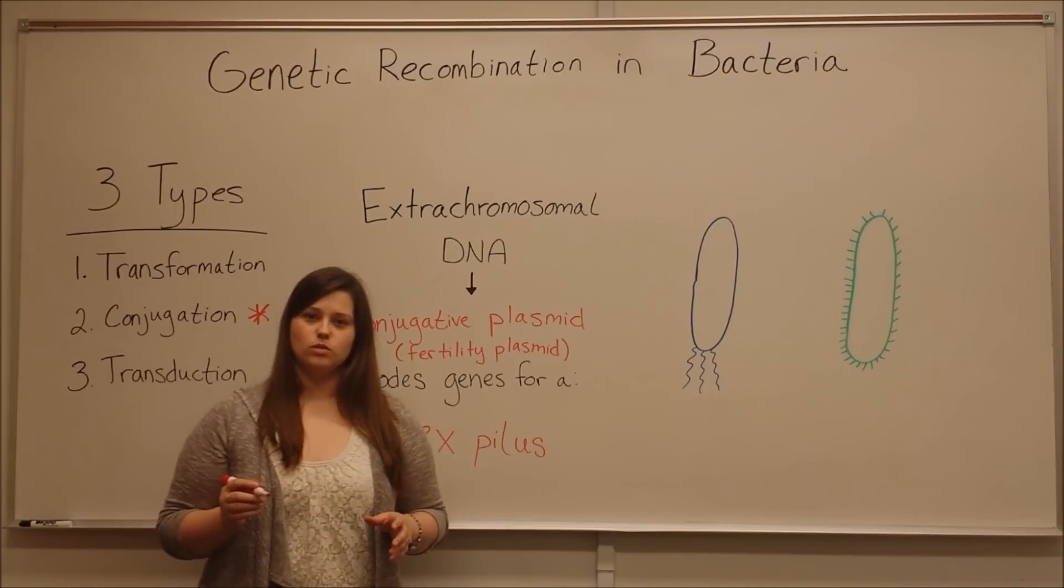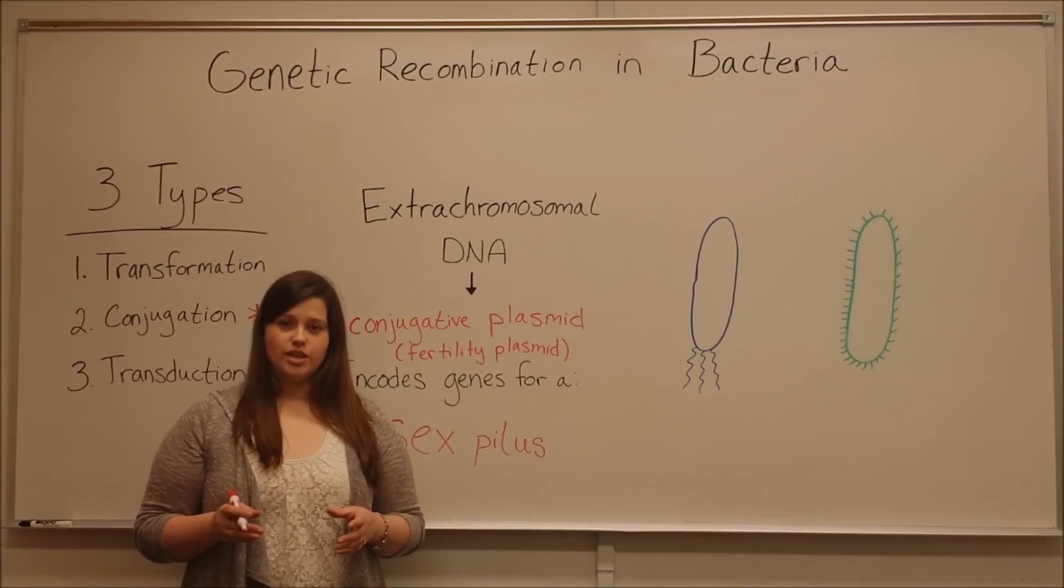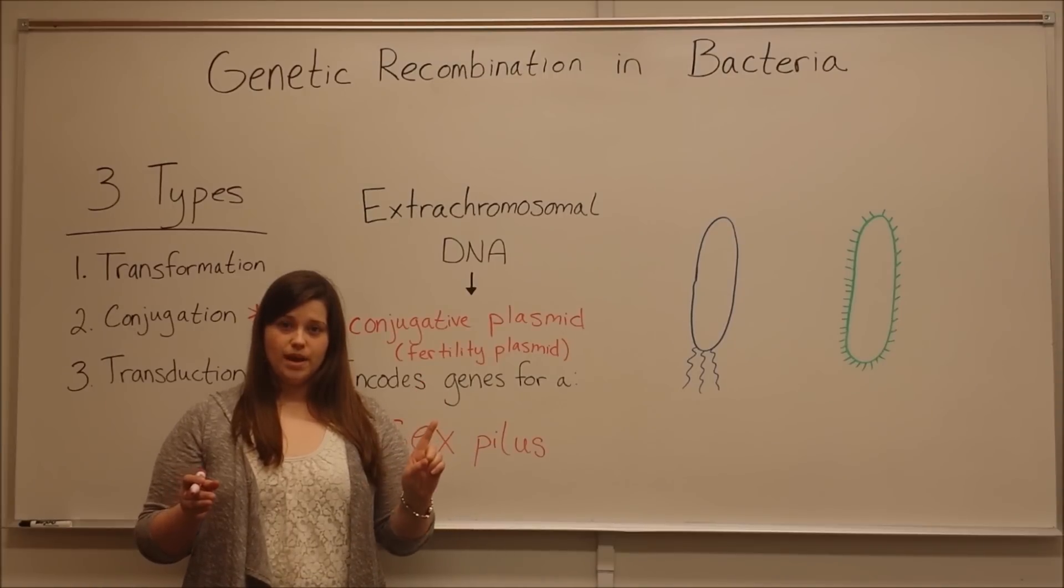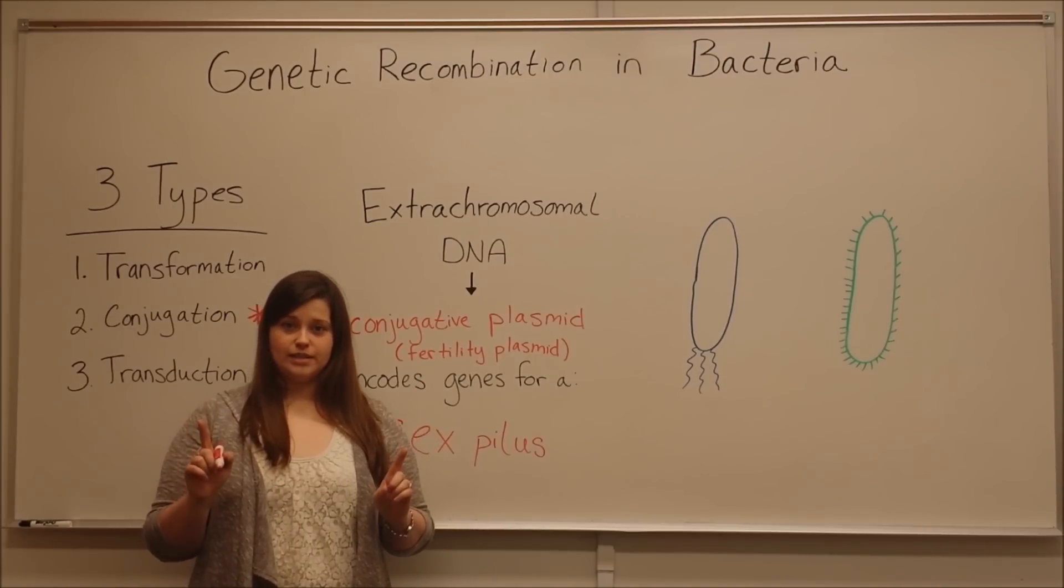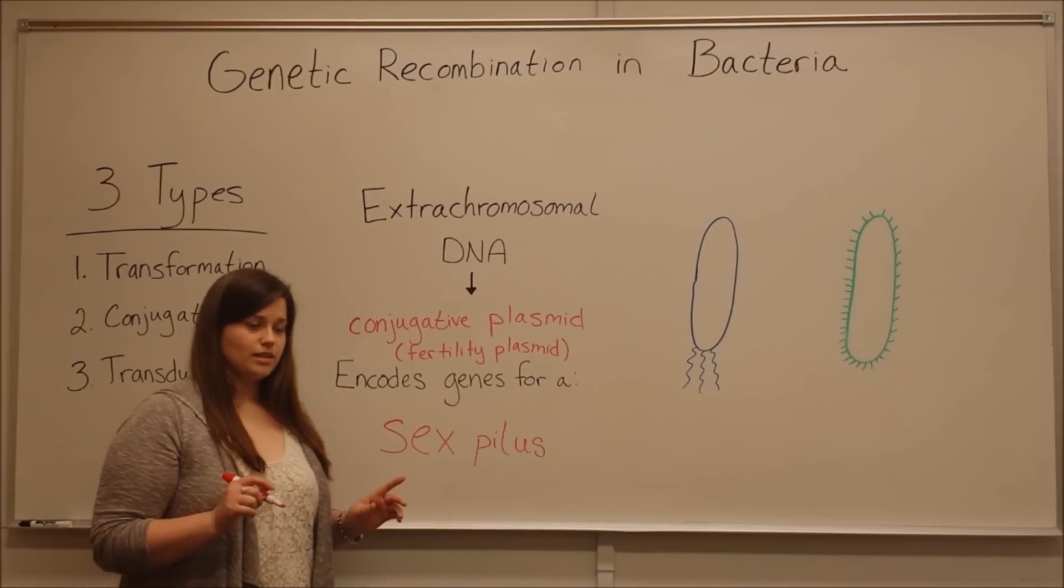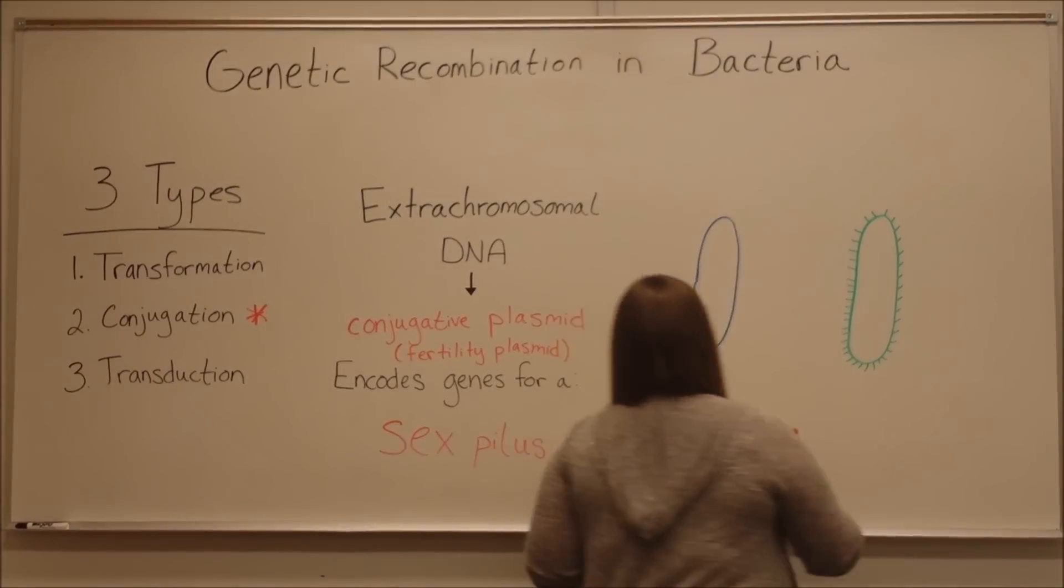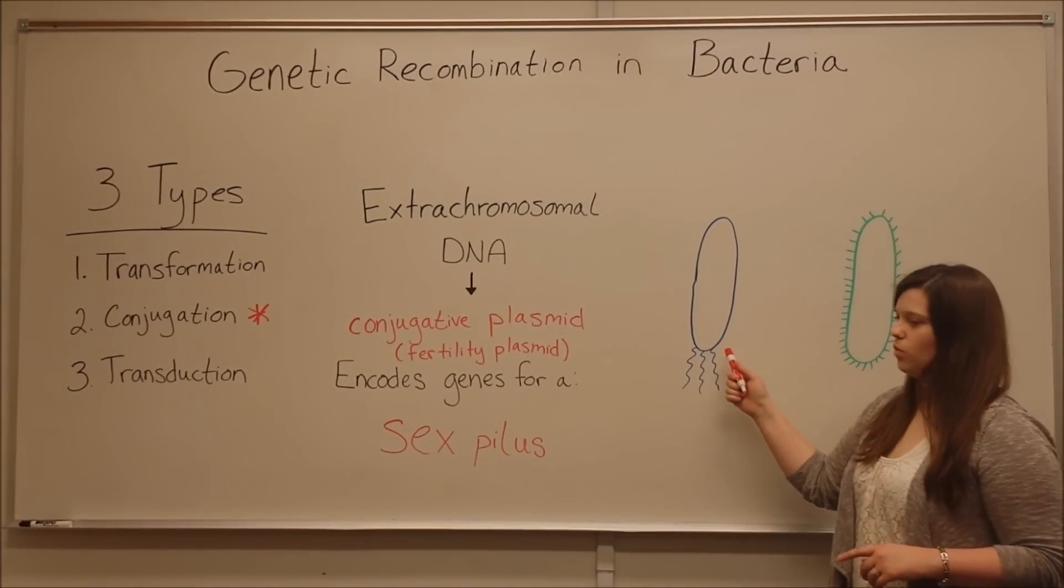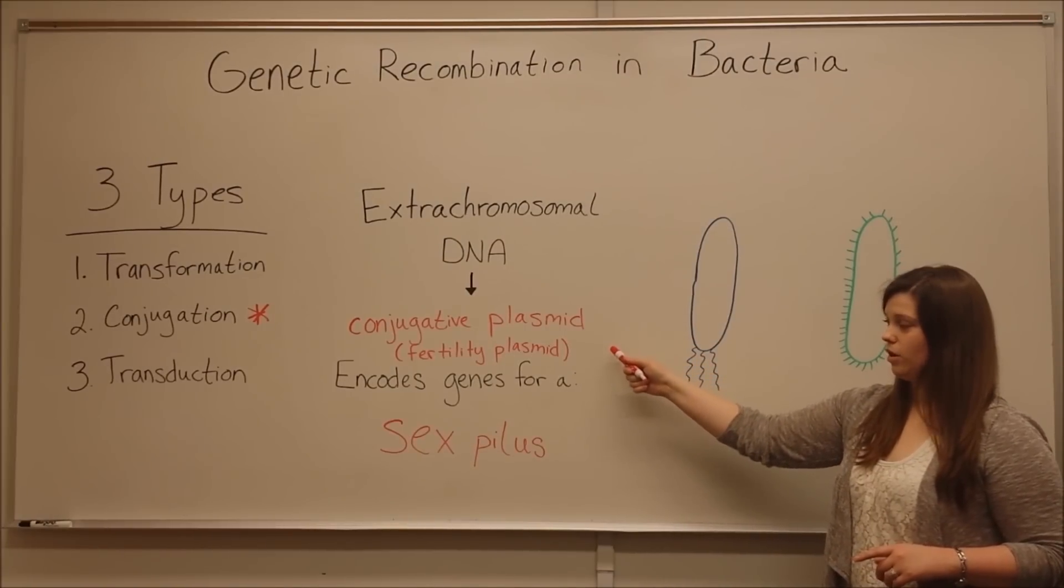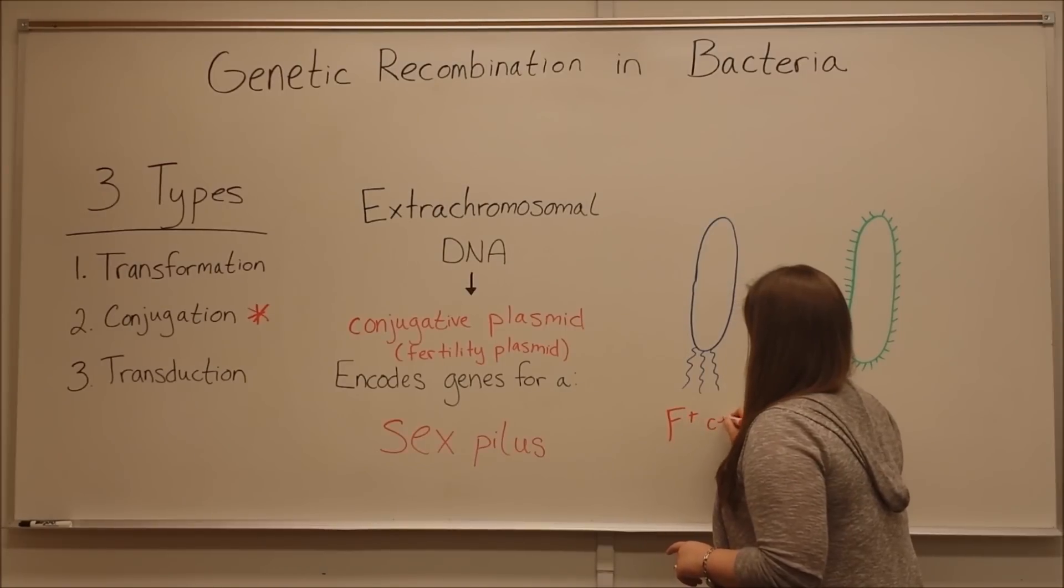The sex pilus enables conjugation to happen. The definition of conjugation is the transfer of genetic material from one bacteria cell to another by direct cell-to-cell contact. That direct contact is made possible by the sex pilus. A bacteria with this conjugative plasmid is called an F-plus cell.